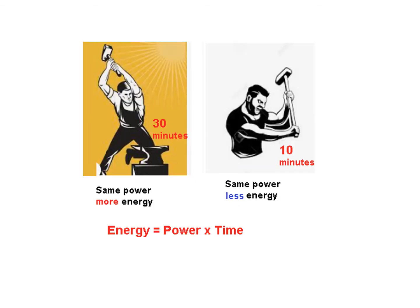Let's have a very crude example for those who have difficulty relating energy and power. Let's assume two blacksmiths working with the same weight hammer, so we can say they have the same power. But this person after 10 minutes gets exhausted and this person continues for 30 minutes. So we can say he has more energy and this guy has less energy. Energy can be related as power multiplied by time — 10 minutes means less energy, 30 minutes means more energy.